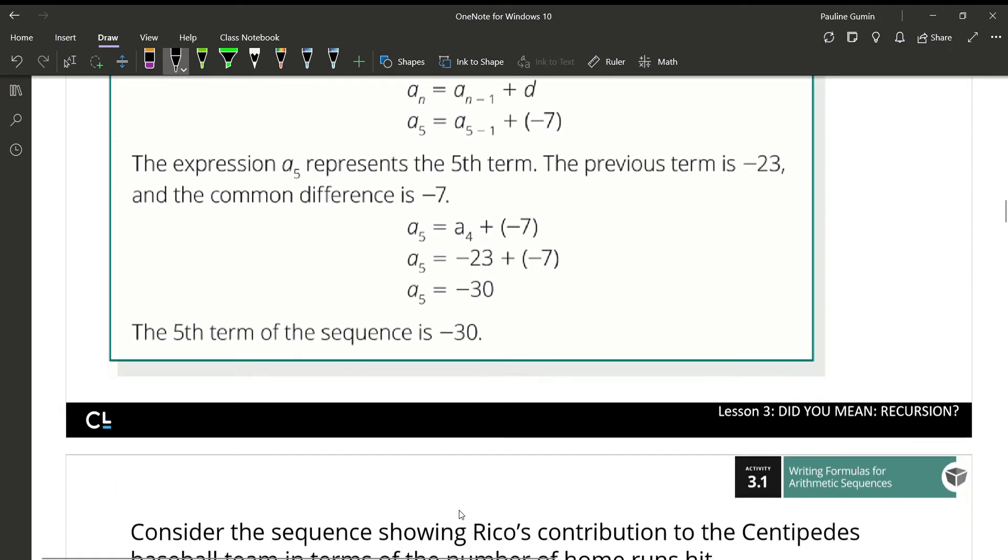Okay. I'm going to multiply 18 by 85. 18 times 85 gives us 1,530. And now I can finish up by adding 125 and 1,530. Rico donates $1,655 after 86 home runs. I hope this was helpful. If you have any questions, please let me or whoever your teacher is know. And have a wonderful rest of your day. Bye.